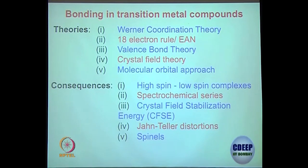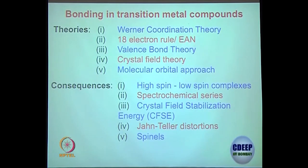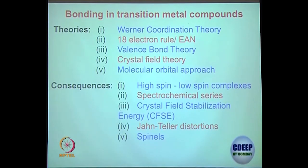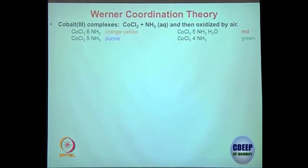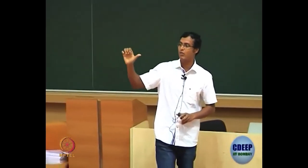I will start with Werner coordination theory. I would like to take you more than 100, 120 to 130 years back to what chemists were thinking at that time. Right now we see books that are well written because a lot of study has already been done over the last 100 to 150 years. If you just look back, there was almost very little understanding about 150 years ago.